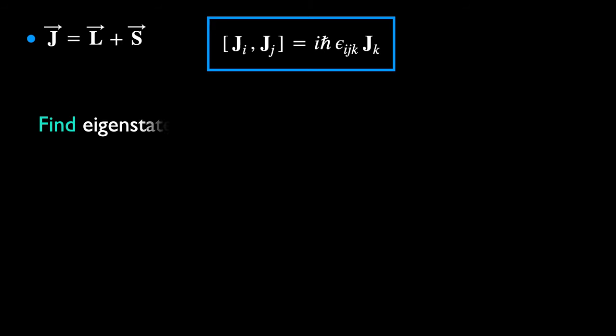Our task now is to find the eigenstates and eigenvalues of the total angular momentum J. These states will be useful for explaining the multiplicity of spectral lines as mentioned previously. And we shall do this in the most general way, using just the commutation relations that must be satisfied in any representation — that is, using just the algebra of rotation.